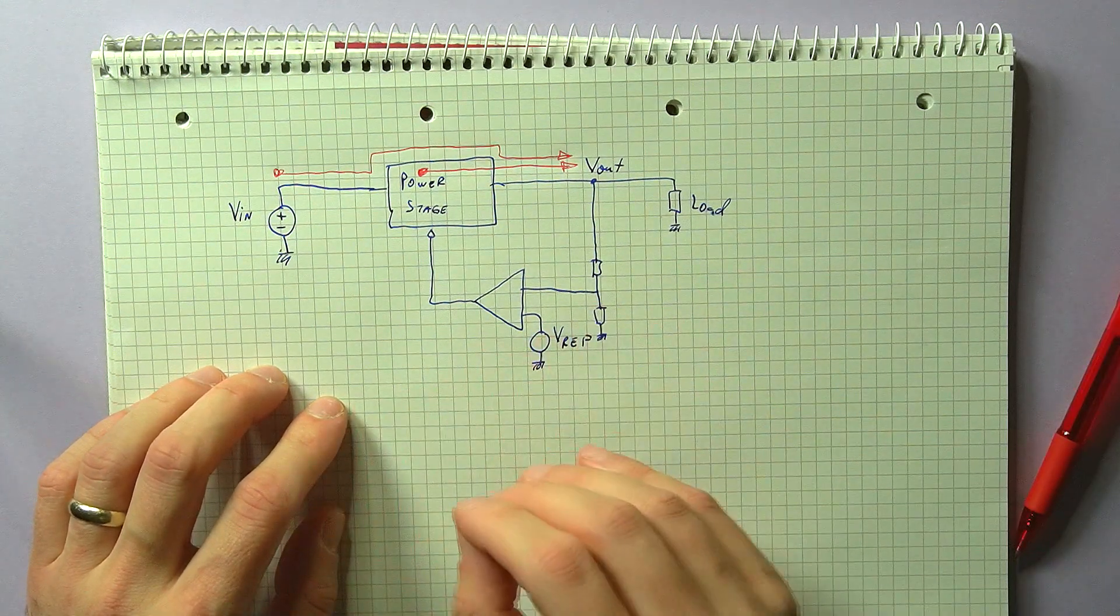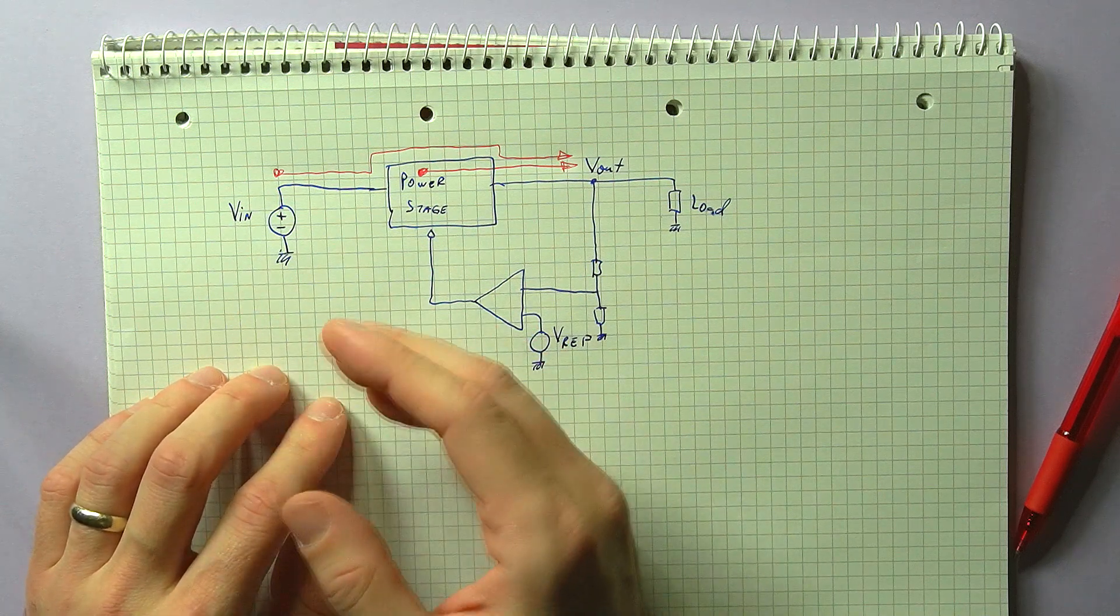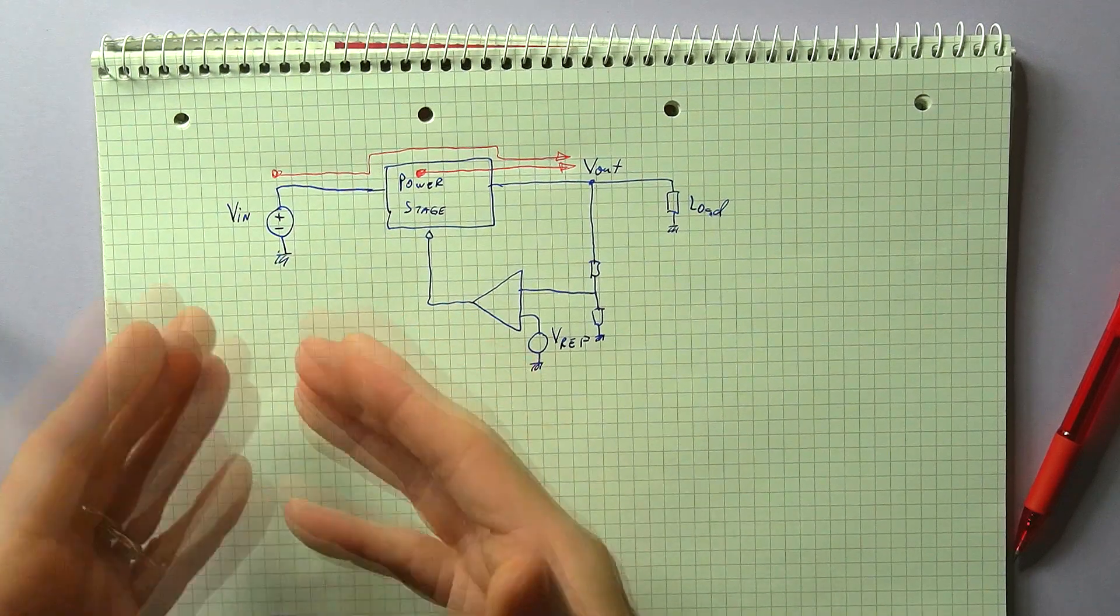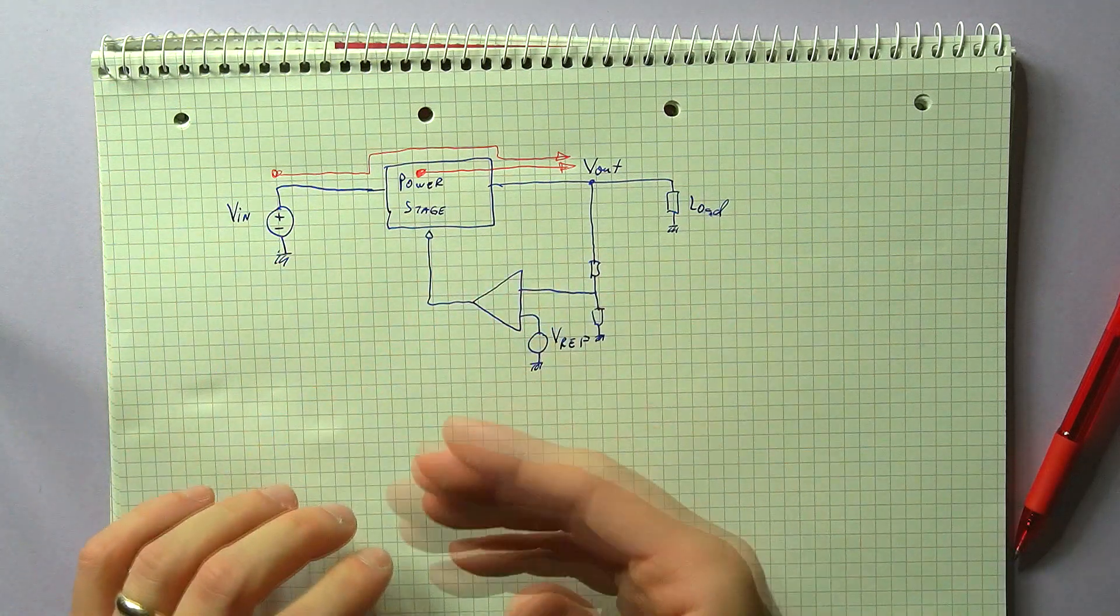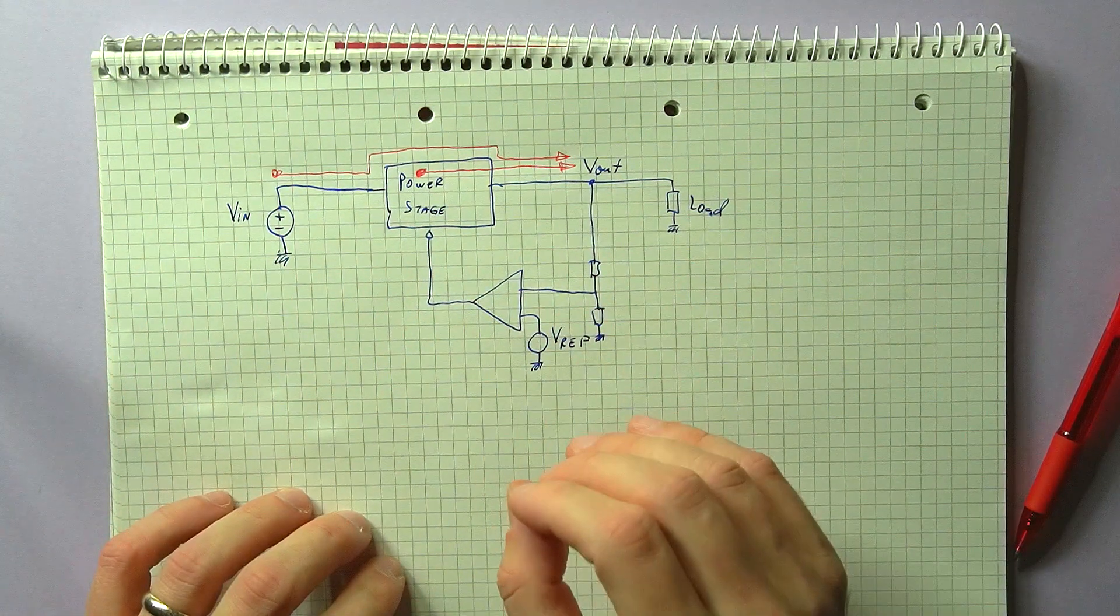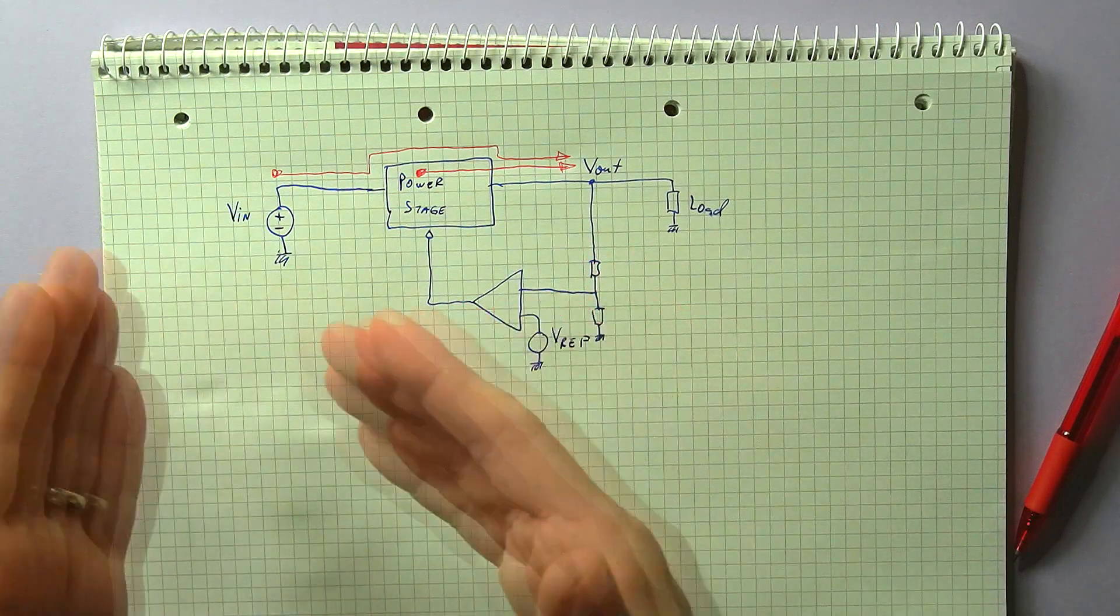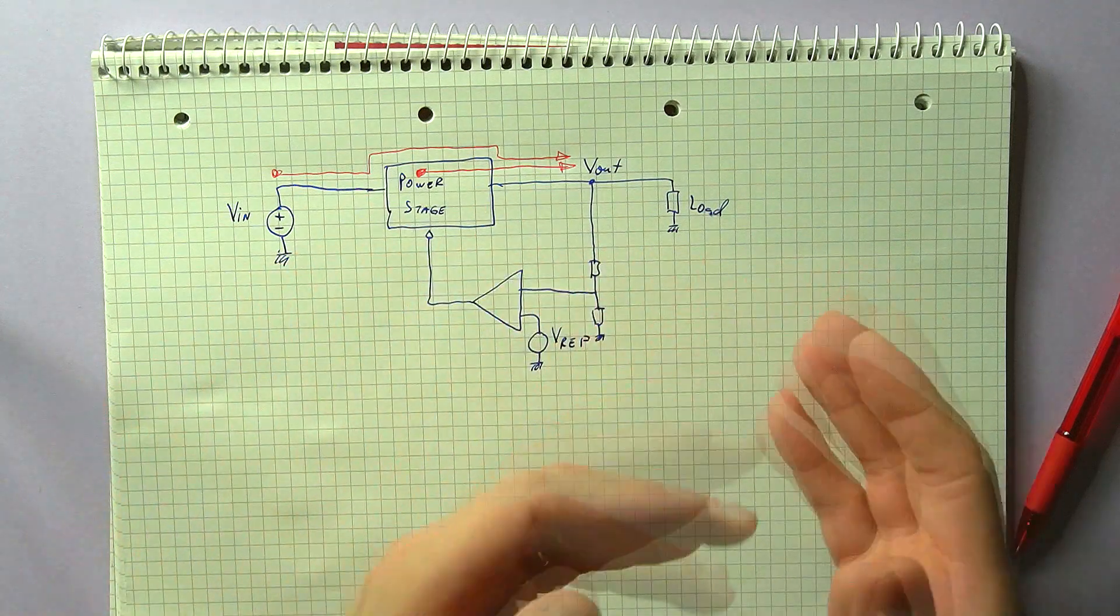Another noise source which is independent of power supply type is noise coming from the input side. The input of the supply is not always perfectly clean. There will be some noise here, and part of it will pass through the supply. In this category, you can also include noisy environments. So if the supply is placed close to other noise sources, these can couple into the supply and generate variations on the output.